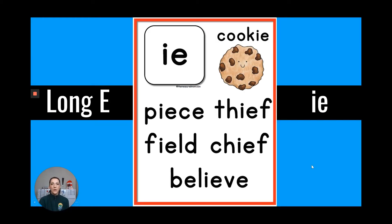Now we have I-E. I-E can make the long E sound as in cookie, piece, thief, field, chief, and believe. And the only one that I believe we have up here that is a homophone is piece. This piece, P-I-E-C-E, piece means a part of something, like I want a piece of the pie. The other piece, like I want peace in the world, that piece is P-E-A-C-E. So this piece, try to think about it, you actually see the word pie in there. P-I-E is pie. I want a piece of the pie. That piece is a slice or a part of something.